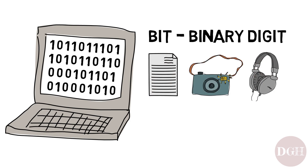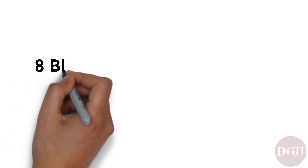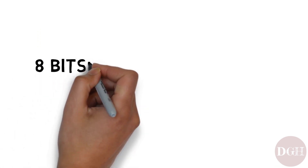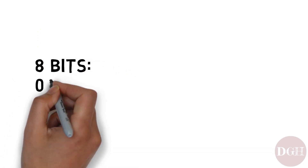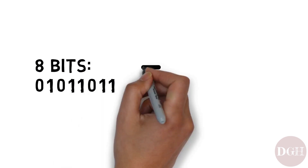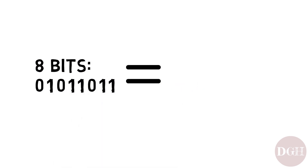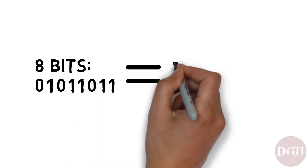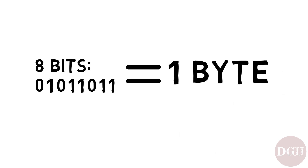The number of bits we have determines how much information we can store. For our next term, it turns out if you take 8 of these bits — 8 of these 1s and 0s — and put them together, that's called a byte. It's spelled with a Y, and it refers to 8 bits put together.